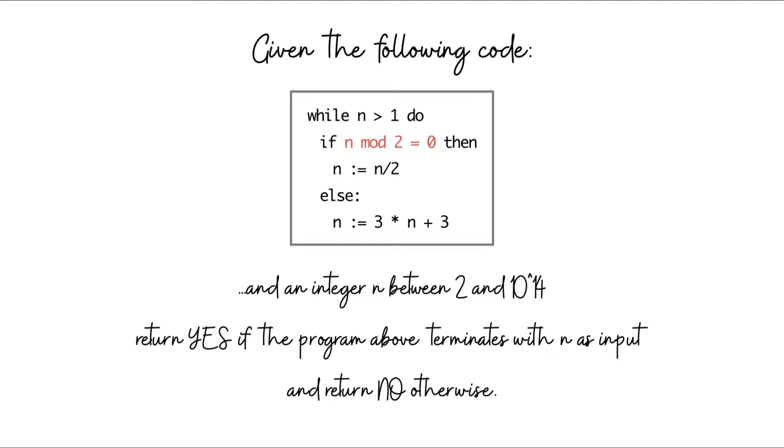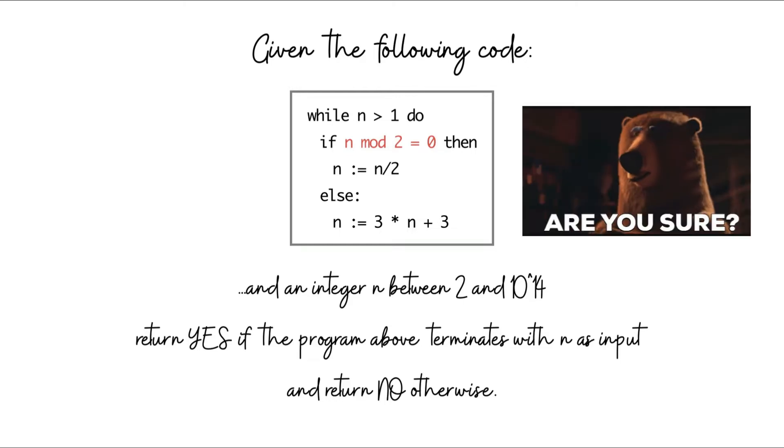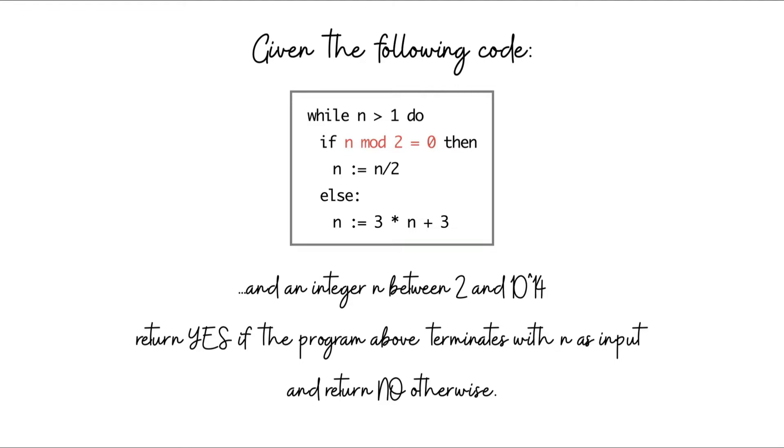If your code actually terminates within a small number of steps, you can confidently conclude that the program indeed terminates. However, suppose your code runs for a thousand, ten thousand, or even a hundred thousand steps and still hasn't terminated. Can you still confidently conclude the program will never terminate? These early steps may not be a good indicator of what happens ultimately. You might need to wait for another three steps or another 10 billion steps.